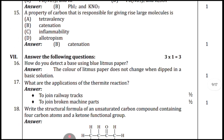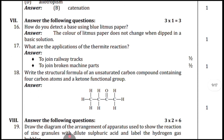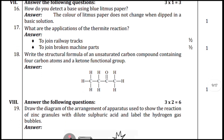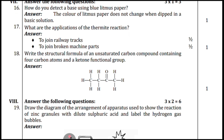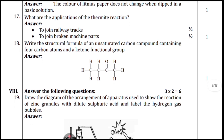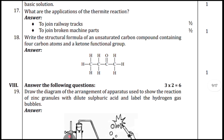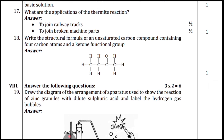One-mark question: how do you detect a base using blue litmus paper? The answer is: the color of blue litmus paper does not change when dipped in a basic solution, because you cannot test a base using blue litmus paper — you must use red litmus paper. Mention the applications of the thermite reaction: to join railway tracks and to join broken machine parts.